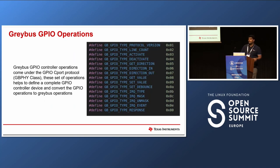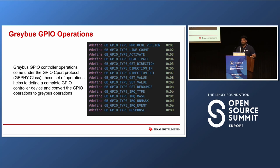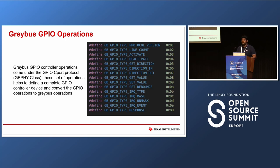Before we go into how to create fake Greybus controllers in user space, let's look at the important operations. We'll be discussing creating a GPIO controller and also an I2C controller and attaching devices to it. On a GPIO controller the important operations include things like get value, set value — on an actual device these fetch details from or write to controller registers based on the API calls.